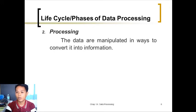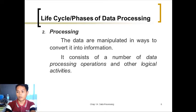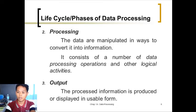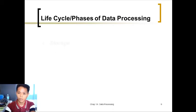Processing: The data are manipulated in ways to convert it into information. Data is converted to become information. It consists of a number of data processing activities. Output: The processed information is produced or displayed in usable form on the monitor or printed from the printer.